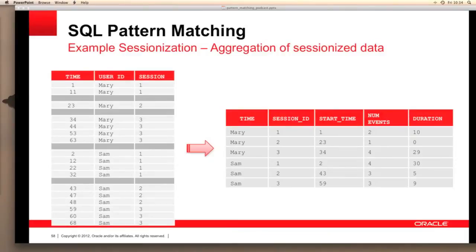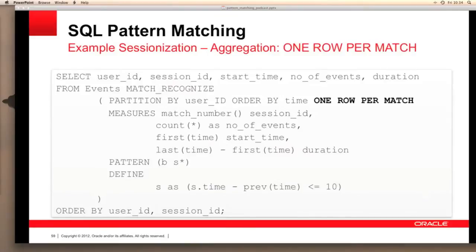Here we've reduced the output from our previous table by using the one row per match clause, and adding some aggregations to count the number of events and duration of each session. The SQL to achieve this shows we've added new measures such as count star, and calculated the duration of each session by subtracting the first instance of a timestamp from the last instance of a timestamp within our pattern matching. Features such as last, first, and the use of aggregations like count were discussed in the second podcast, and you can get more information from the SQL documentation.